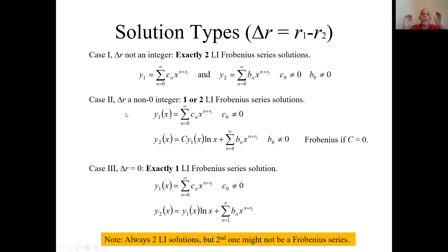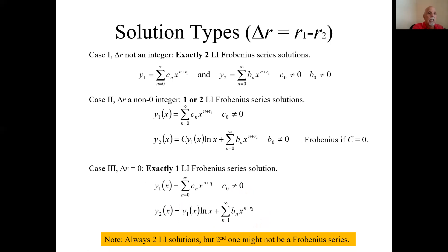So if we're only trying to find out how many Frobenius series solutions exist in case two, we can't say — it could be one or it could be two. Case three is where the difference between the indicial roots is zero, giving a double root. Then you will not get a second series solution; your second solution will involve the log of x. In my course we're not going to cover that second solution. But one series solution you do get is the Frobenius series based on the larger indicial root, and again that initial coefficient cannot be zero. So those are the three cases — this is a fairly important chart.